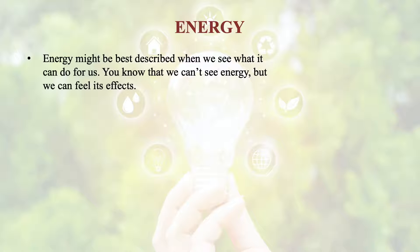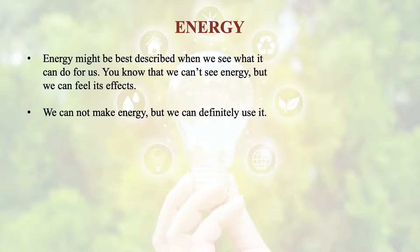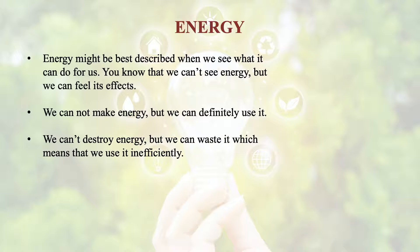Energy might be best understood when we see what it can do for us. We can't see energy, but we can feel its effect. We cannot make energy, but we can definitely use it. We can't destroy energy, but we can waste it, which means that we should use it efficiently. We are not using energy efficiently because when we are converting energy from one form to another, there are many losses in the form of heat, in the form of waste particles, in the form of ash and whatever. We have to minimize the stages involved in the conversion process so that we could increase the efficiency at the end use.